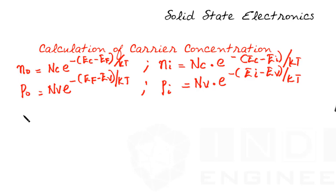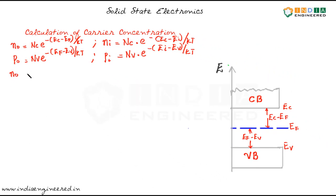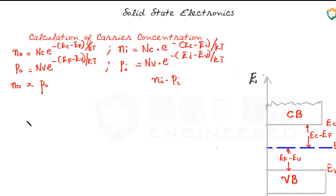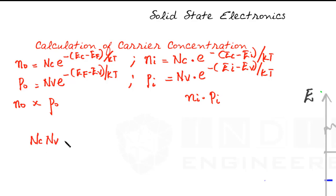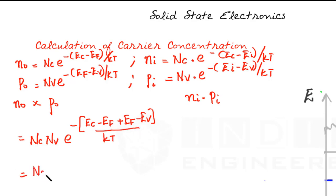Now let's multiply N0 and P0. We will find N0 times P0, and here we will find Ni times Pi, which equals Ni squared because Ni equals Pi. When we multiply these two, we have N0 times P0 equal to NcNV times e to the power of minus (EC minus EF plus EF minus EV) by KT. This EF terms cancel, giving us NcNV times e to the power of (EC minus EV) by KT.